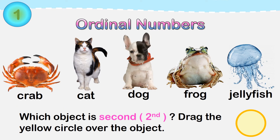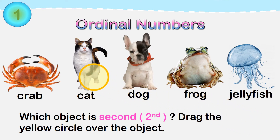Which object is second? Drag the yellow circle over the object. Do you know the answer? That's correct. The cat is second.